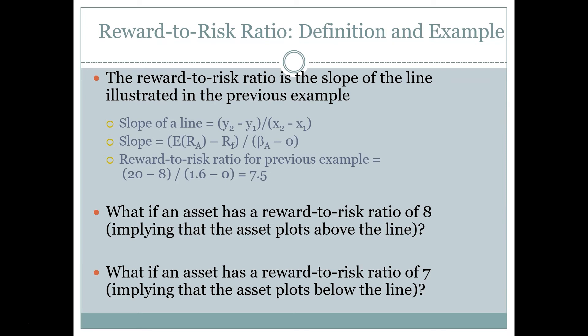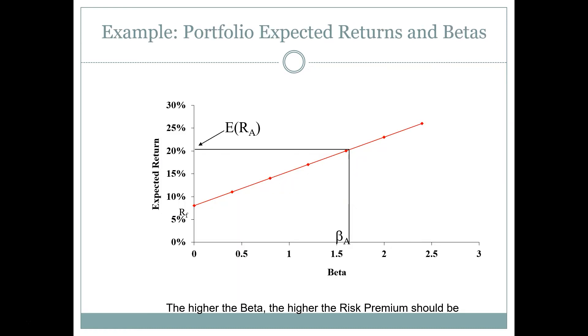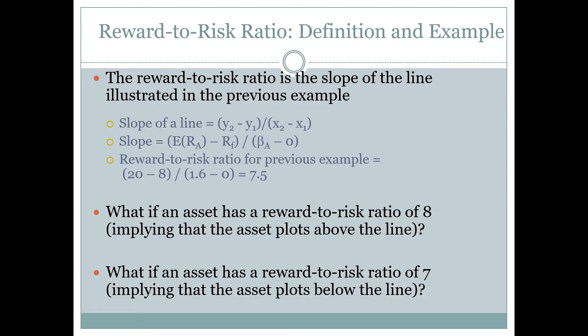To turn this line into a usable relationship, I need the slope of the line. The formula for a line is rise over run, where rise is on the y-axis and run is on the x-axis. The slope is the difference between the expected return for A and the risk-free rate — that's y2 minus y1, the rise — divided by the difference between the beta for A and the beta for the risk-free rate, which is the run. Plugging in: 20% minus 8% divided by 1.6 minus 0 gives a slope, or reward-to-risk ratio, of 7.5.